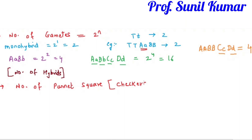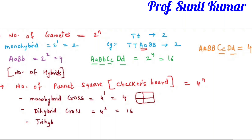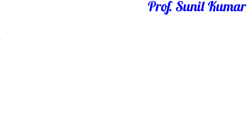Next is the number of boxes in a Punnett square. The formula is 4 raised to n. For a monohybrid cross it is 4 to the power 1, giving 4 boxes. For a dihybrid cross it is 4 to the power 2, giving 16 boxes. For a trihybrid cross it is 4 to the power 3, giving 64 boxes.